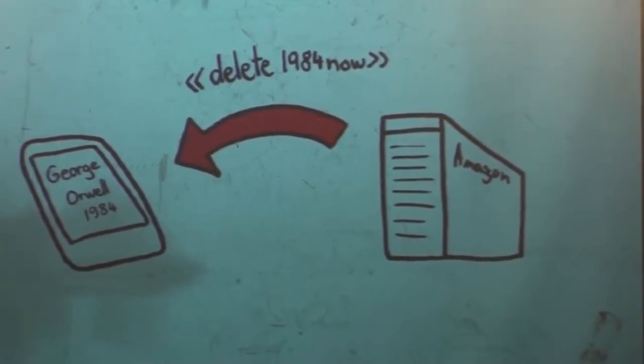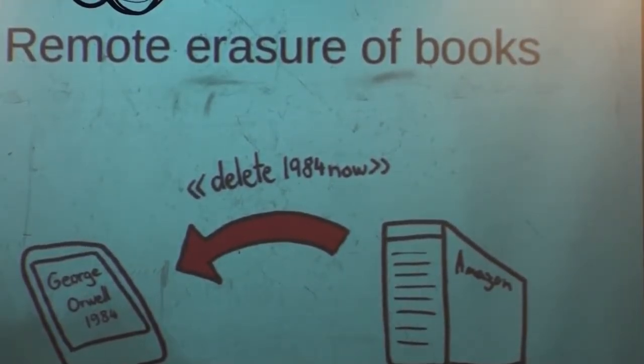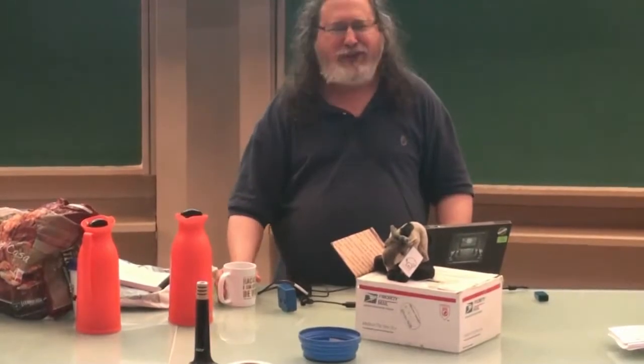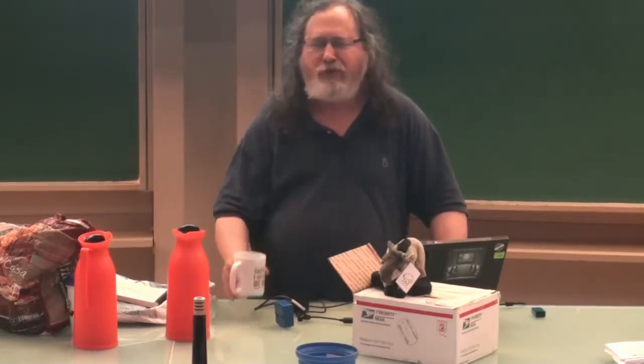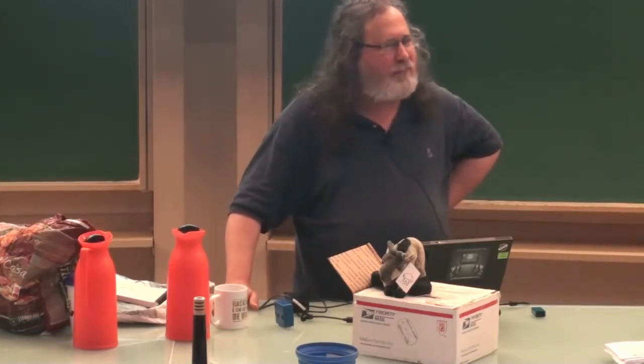There was a lot of criticism, so Amazon said it would never do this again unless ordered by the state. If you know what 1984 is about, that promise is not very comforting, is it? But actually it wasn't a promise — it was just a meaningless noise, something that Amazon could say to pull the momentum out from the criticism. It was not a sincere commitment and had no legal force. The book was 1984 by George Orwell. They deleted thousands of copies of 1984.